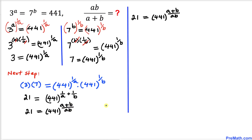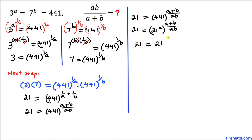Moving to the right hand side, I can write 441 as 21 squared, so we have 21 = (21^2)^((a+b)/ab). Applying the rules of exponents, this becomes 21 = 21^(2(a+b)/ab).